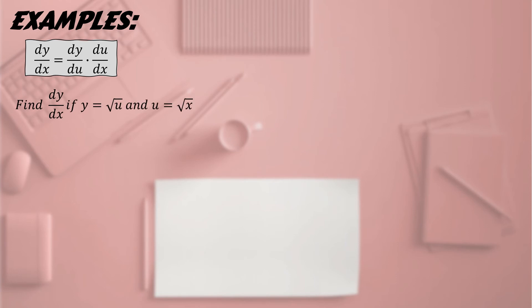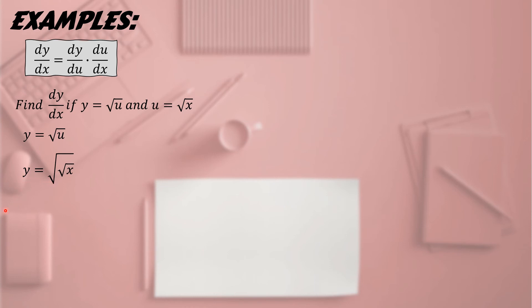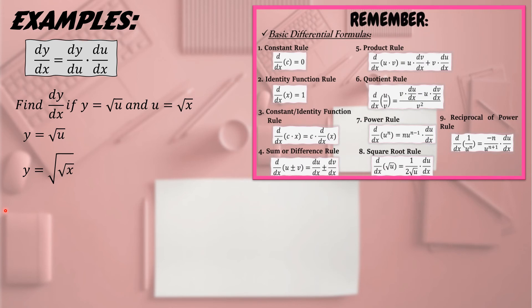Let's have another example. Find dy/dx if y = √u and u = √x. Using the shortcut method, substitute u: y = √(√x). We now have a double square root. We will use the square root rule, whose formula is 1/(2√u) times du/dx.